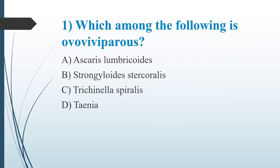First question: Which among the following is an ovoviviparous parasite? Option A: Ascaris lumbricoides. Option B: Strongyloides stercoralis. Option C: Trichinella spiralis. Option D: Taenia. The answer is Option B, Strongyloides stercoralis.